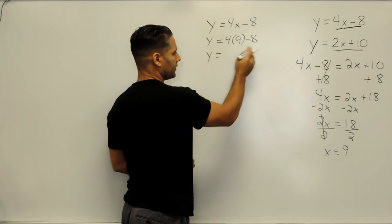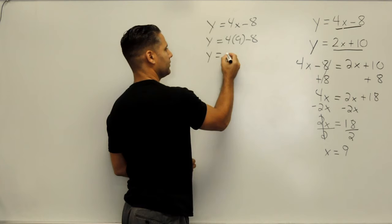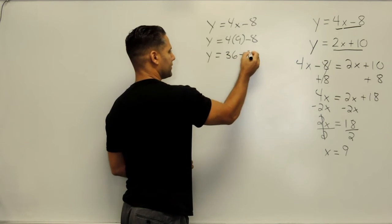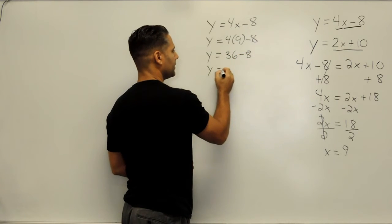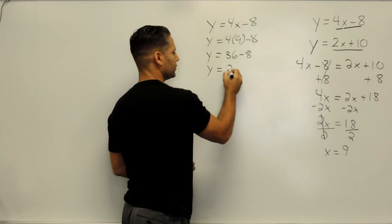So next we simplify this side of our equation. 4 times 9 is 36. We have to subtract 8 from that, and 36 minus 8 is equal to 28.